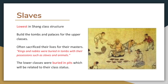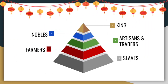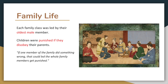Slaves. Slaves were the lowest in the Shang class structure. Their role was to build tombs and palaces for the upper classes. They would often sacrifice their lives for their masters. Kings and nobles were buried in tombs with their possessions such as slaves and animals. The lower classes were buried in pits related to their class status. Family life. Each family class was led by the oldest male member. Children were punished if they disobeyed their parents. If one member of the family did something wrong, that could lead to the whole family being punished.